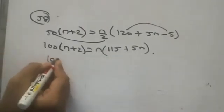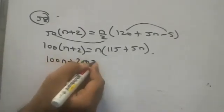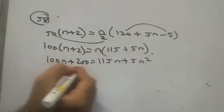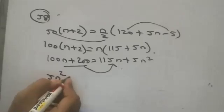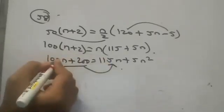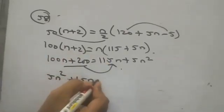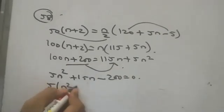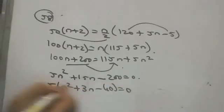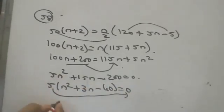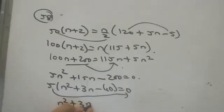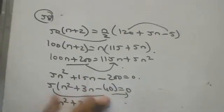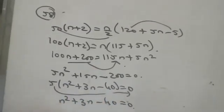So: 100n + 200 = 115n + 5n². Bringing everything to one side: 5n² + 115n − 100n − 200 = 0, giving 5n² + 15n − 200 = 0. Dividing throughout by 5: n² + 3n − 40 = 0.